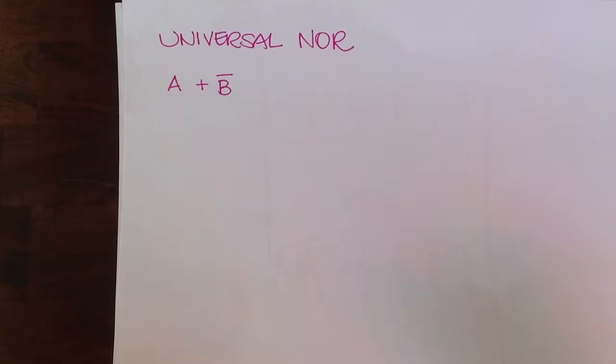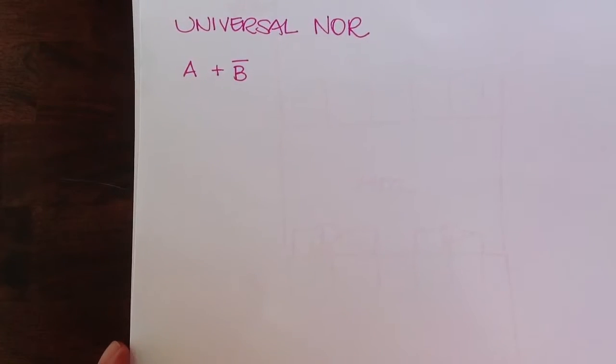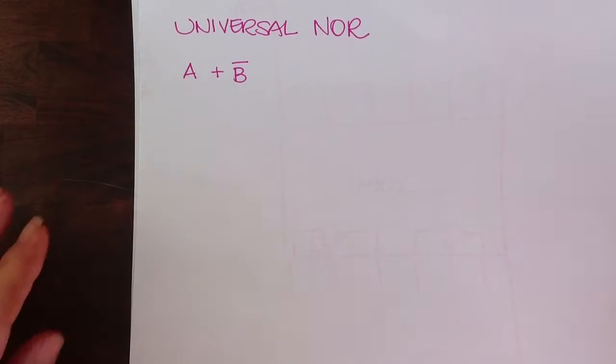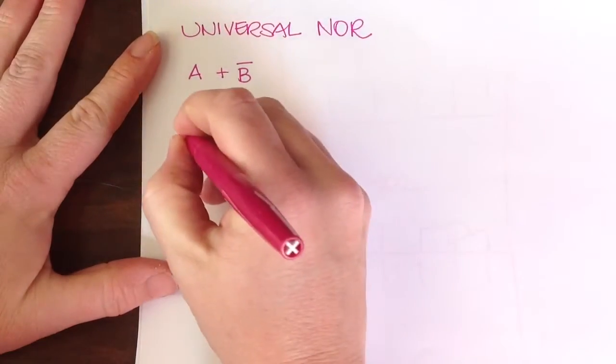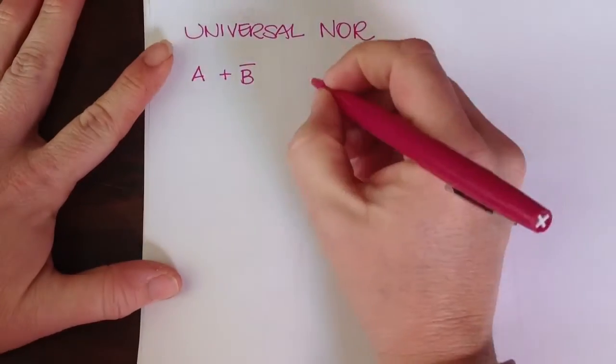All right, so let's practice a little bit with universal NOR, and this is a simple expression. It's just A or not B. So I'm going to quickly draw the AOI.